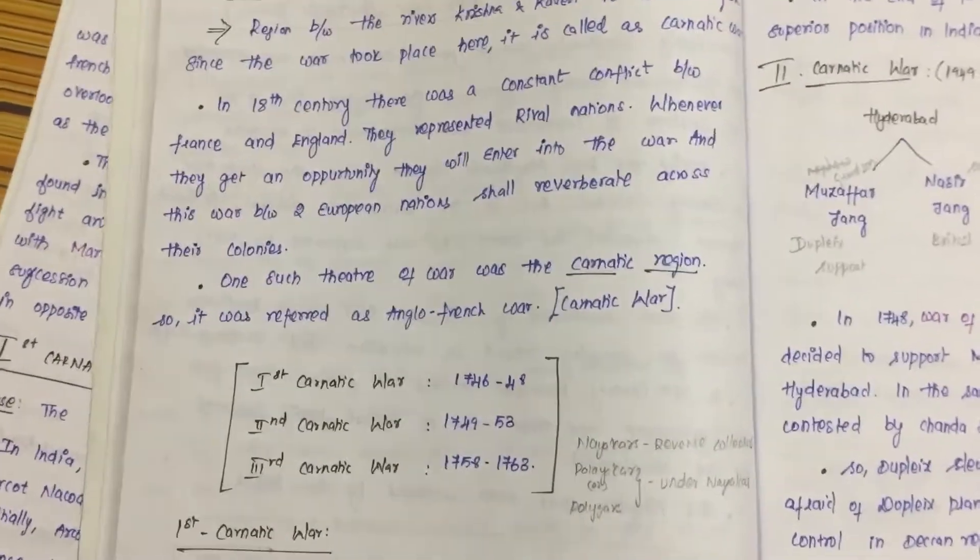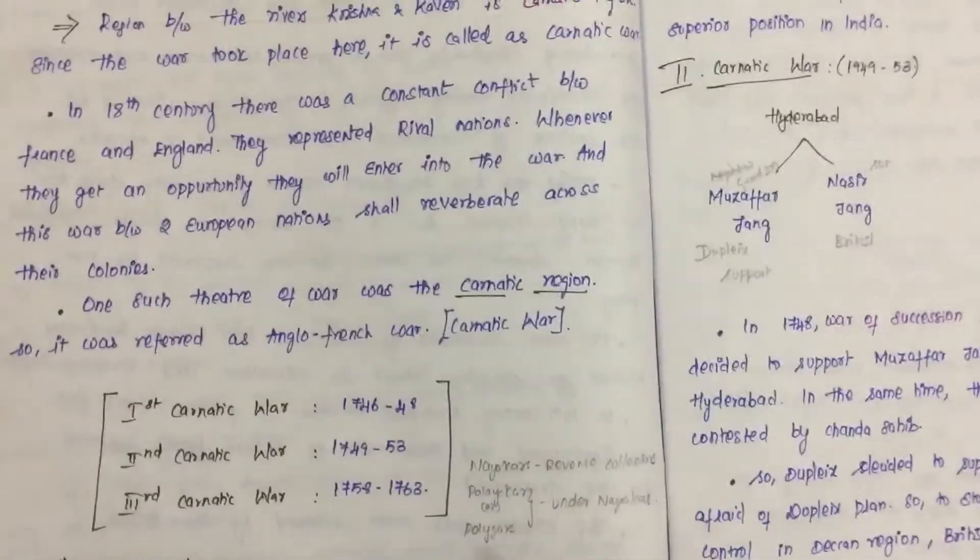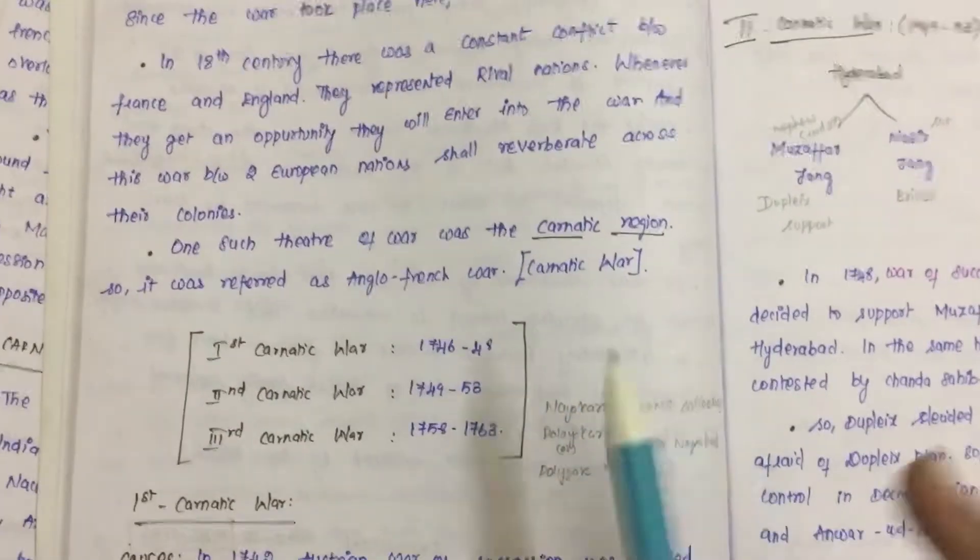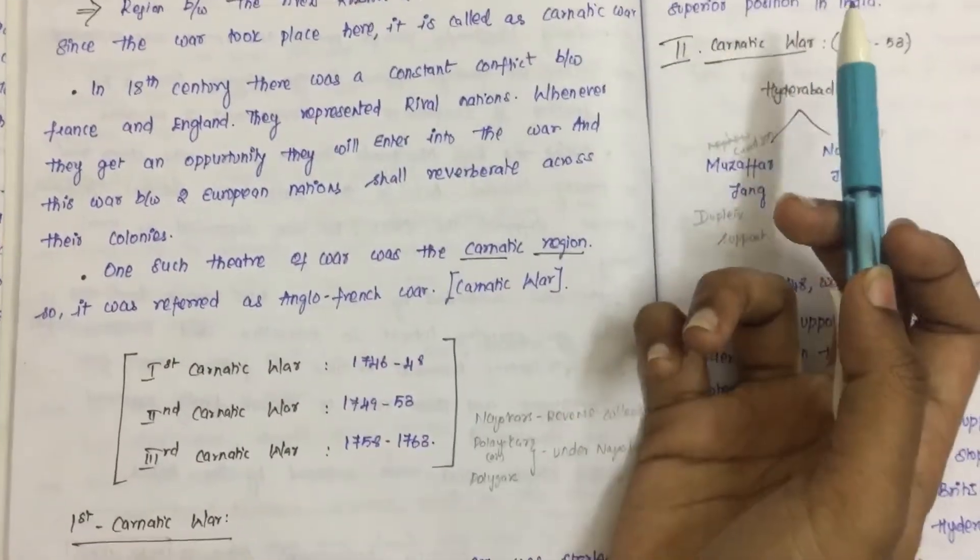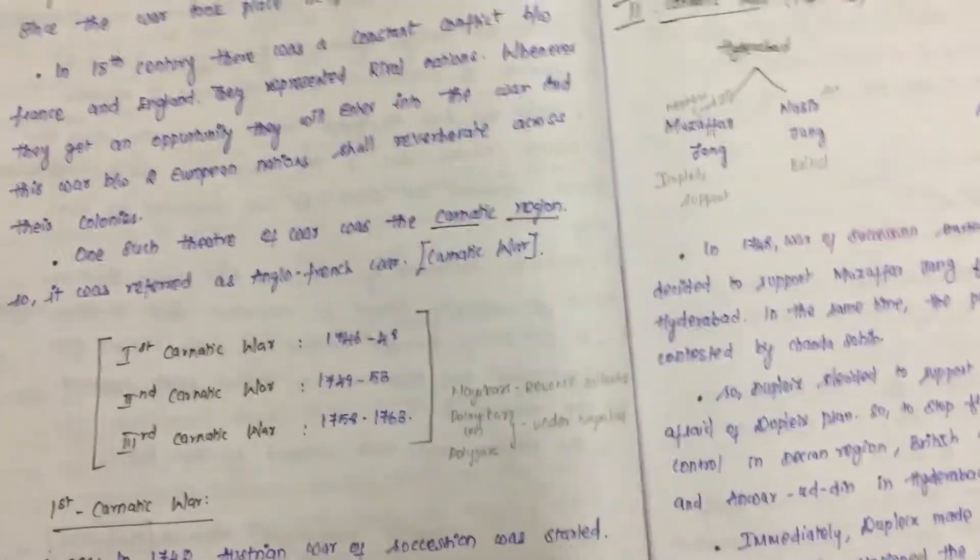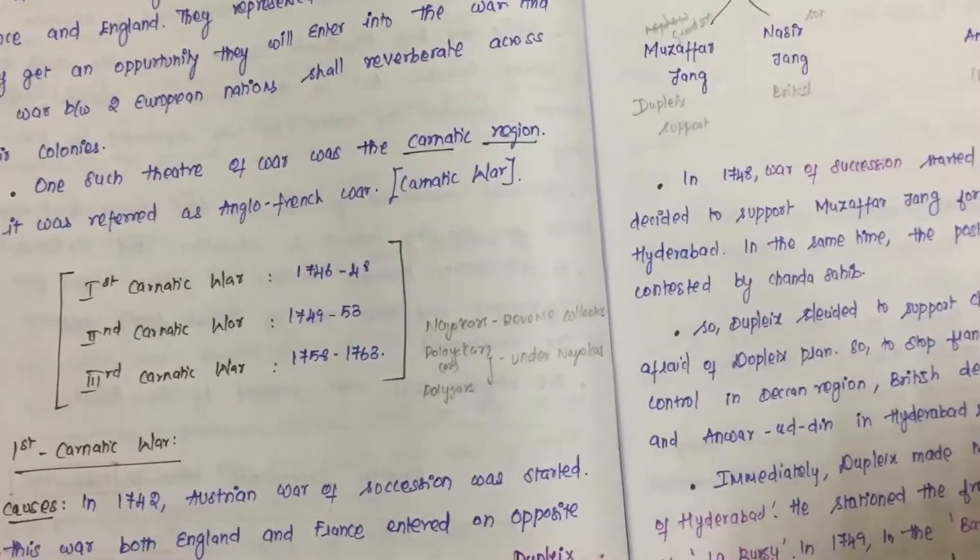Hello everyone, welcome to the Carnatic War. The Carnatic War is in the Carnatic region between the Krishna River and Kaveri River. The Carnatic War is an Anglo-French conflict in the Deccan.